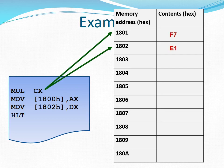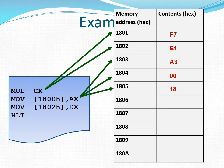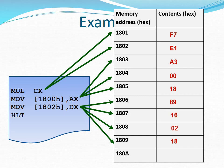The first instruction is a 2-byte instruction loaded into addresses 1801 and 1802. The second instruction is a 3-byte instruction loaded into addresses 1803 up to 1805. The third instruction is a 4-byte instruction loaded into addresses 1806h up to 1809h. The last instruction is a single-byte instruction loaded into address 180Ah.